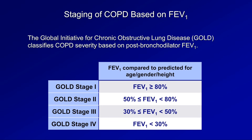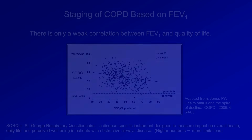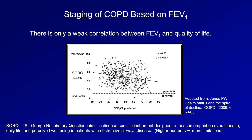Despite this staging system's use in clinical practice, there is actually only a weak correlation between FEV1 and quality of life. In a graph plotting quality-of-life score against FEV1 — where a higher score means worse quality — individual dots represent patients and color bands represent GOLD stages. Although there is a statistically significant correlation at the population level, there is little predictive power for an individual person.